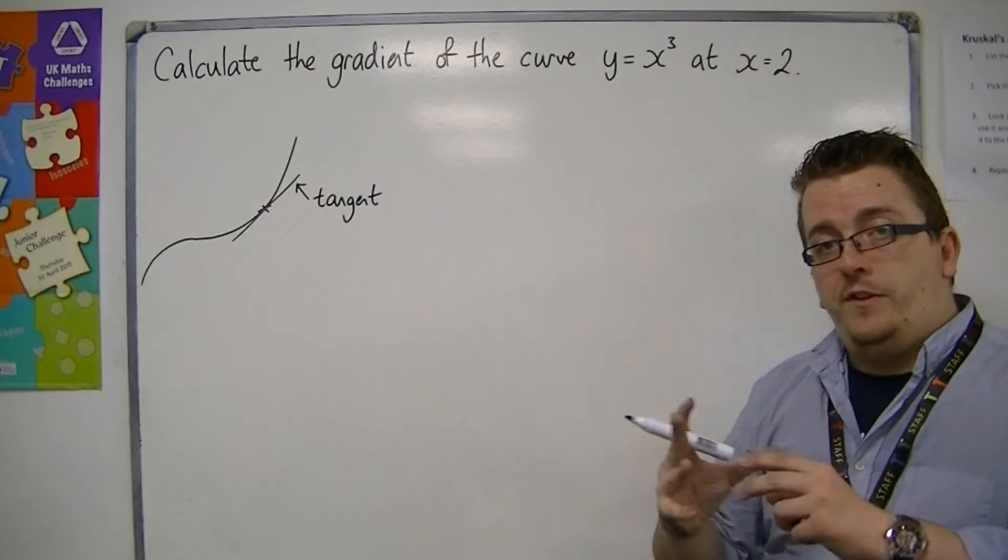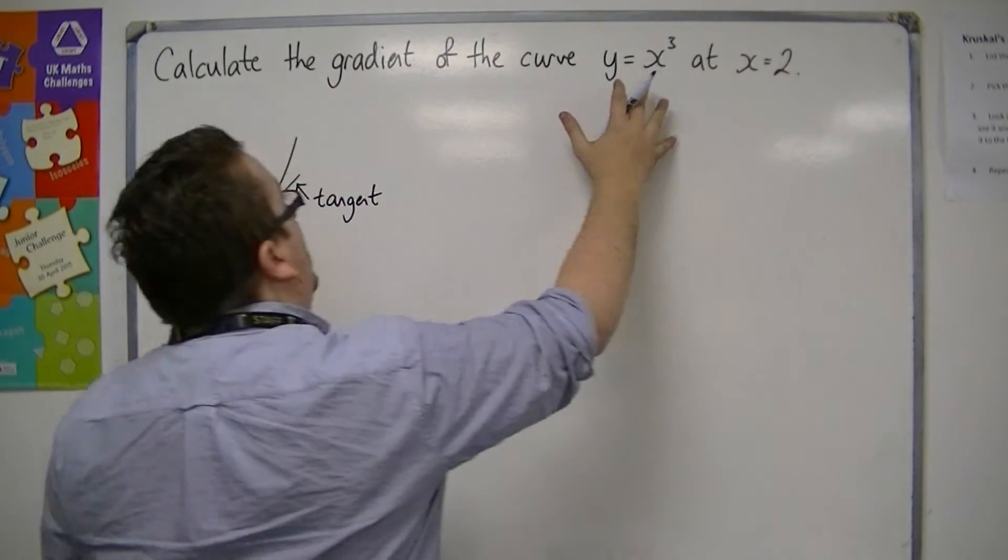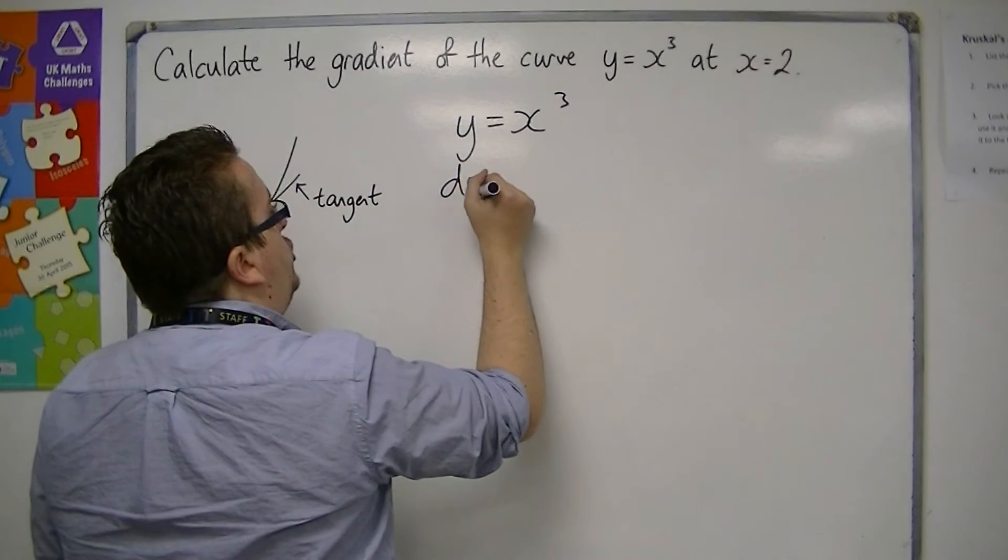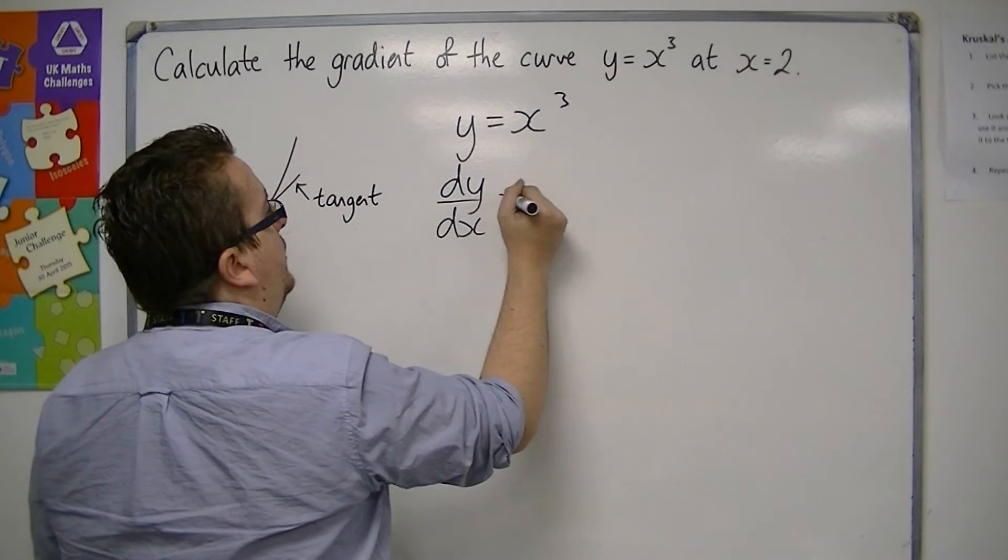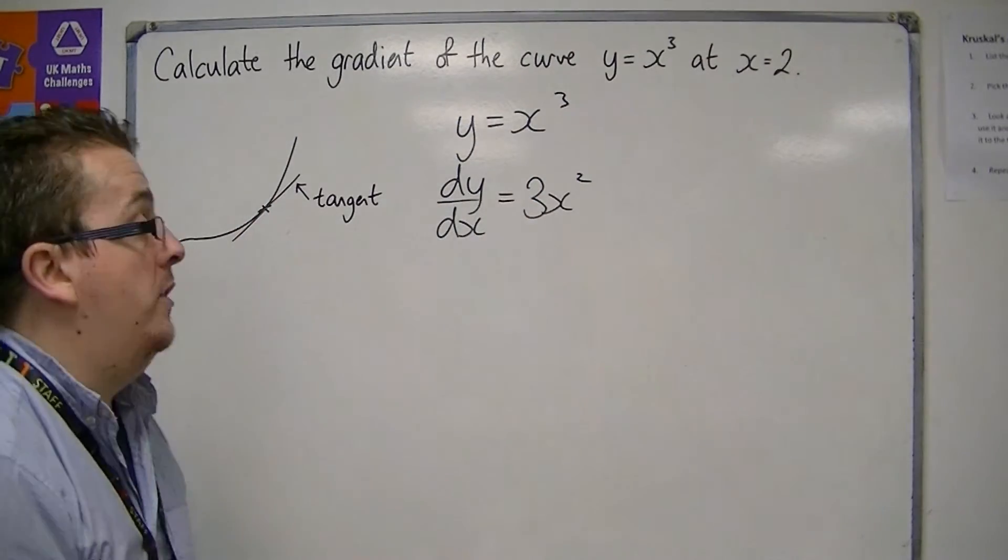So the method and the terminology of how this works is that you get your y equals x cubed, and you differentiate it. dy by dx is 3x squared. The 3 comes down to the front, you take 1 off the power.